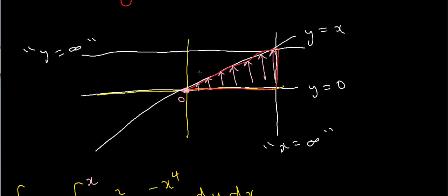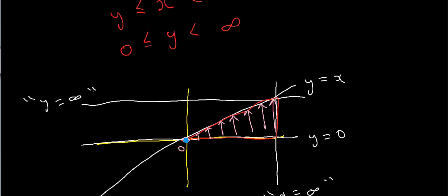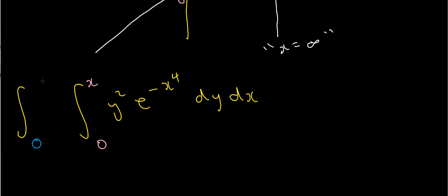Now for the integral with respect to x — it's the same idea but going horizontally instead of vertically. Inside this triangle, I'm starting from 0, so the lower limit is 0. For the upper limit, starting from 0 and going to the right, every single time I hit the line x equals infinity. So my upper limit is infinity. This is the new region of integration — the same region, just with limits accounting for the different order of integration.